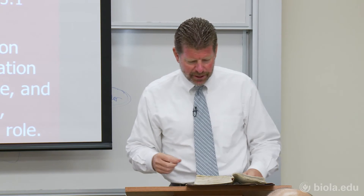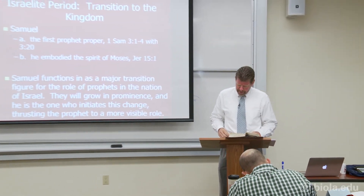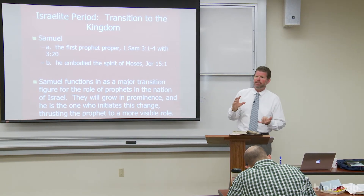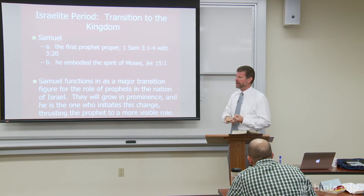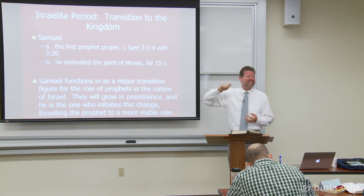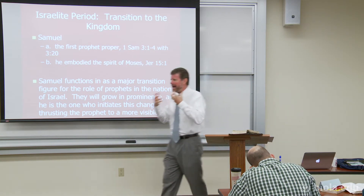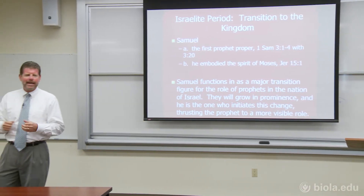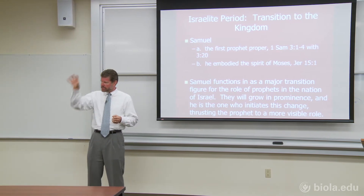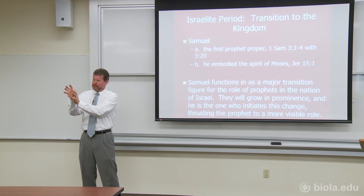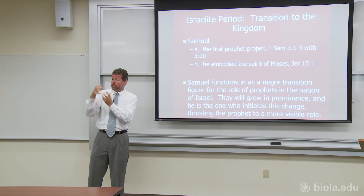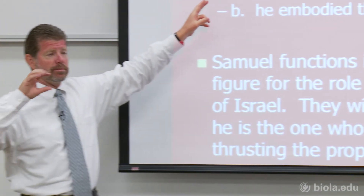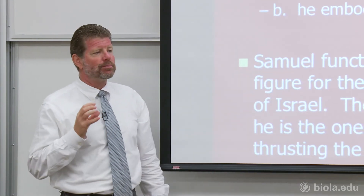The next section is point C on page 20 — the Israelite period, specifically the transition to the kingdom, looking at Samuel's time period. Samuel is a very interesting person because he's prophet, priest, and judge. We are still in the time period of the judges when we're reading about Samuel — that's exactly the way he functions. You can see the cycle again with Samuel because the people see Nahash and the Ammonites coming against them and they cry out for deliverance, but they ask for a king instead of a judge. So we transition here. Moses was the precursor to the prophets, but Samuel is the first prophet proper.